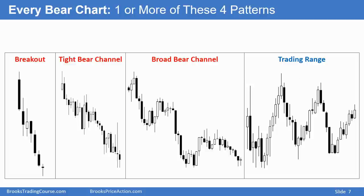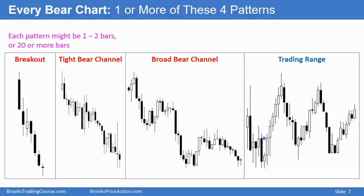So if you look at any chart and it's in a bear trend — starting at the upper left, going down to the lower right — it's composed entirely of one of these four components. Each pattern may be only one or two bars long. Sometimes a pattern can be 20 or 30 bars long. For example, a trading range could easily be the entire chart.